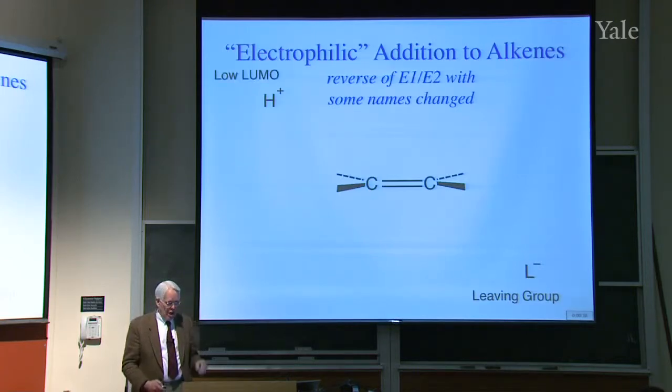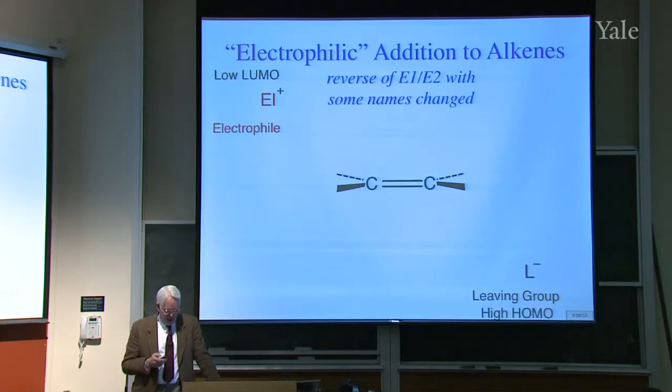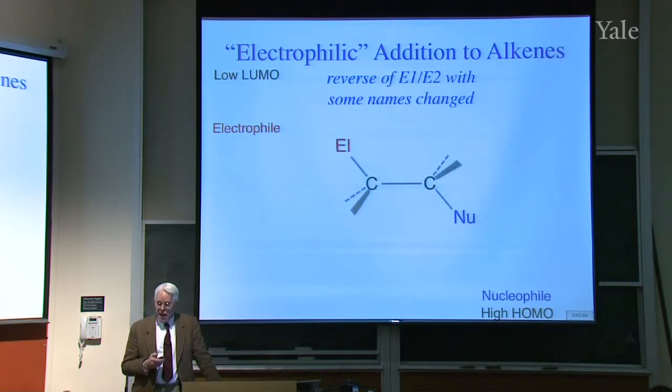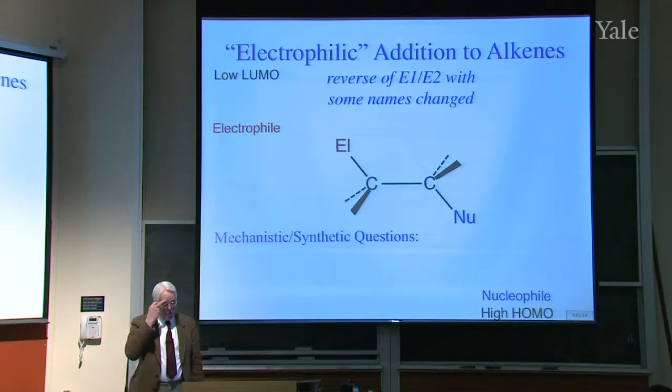The next topic is going to be electrophilic addition to alkenes. Notice that this is the reverse of E1 or E2 with some of the names changed. So where we have a proton there, that's a low LUMO. An electrophile, someplace where electrons could be easily accommodated. But we can generalize it. It doesn't have to be a proton. It can be any electrophile. Just call it EL. And the thing that was a leaving group we're going to change the name of. It's a high HOMO. We're going to call it a nucleophile. And now, with those changed names, we're going to reverse the reaction and take the alkene to a substituted alkane.